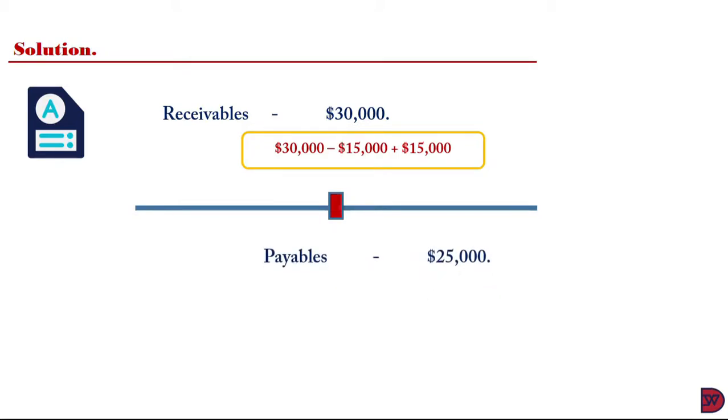When we come to the payables, the total figure to be consolidated will be $25,000, which is made up of the $15,000 of AK plus the $25,000 of Sheila, then we less the $15,000 which Sheila has recorded as a payable to AK.